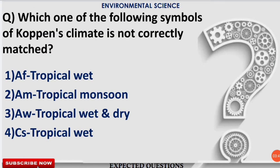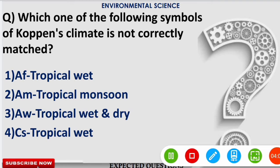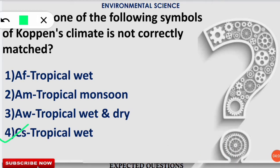The next question is: which one of the following symbols of Köppen's climate classification is not correctly matched? You have to identify which option is incorrectly matched. The correct answer is option number 4. Let's see what Köppen's climate classification is and what these symbols mean.